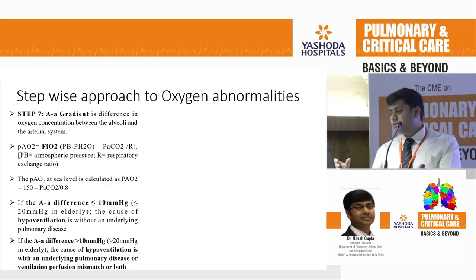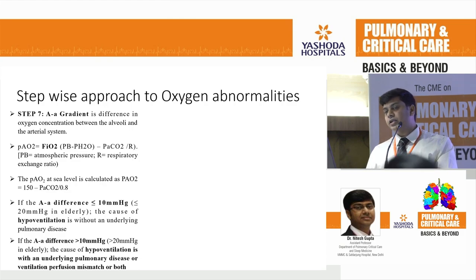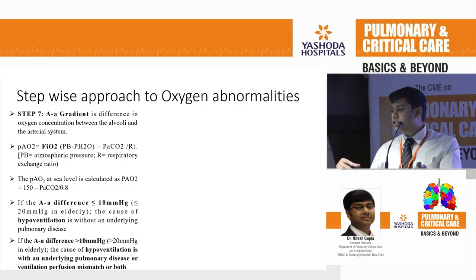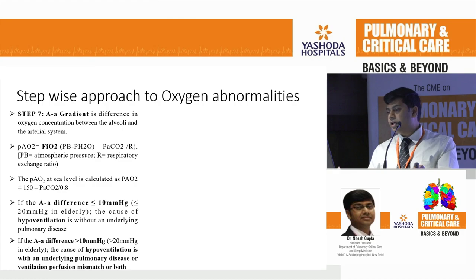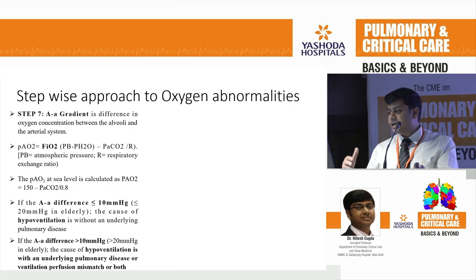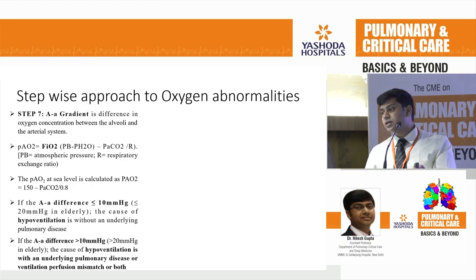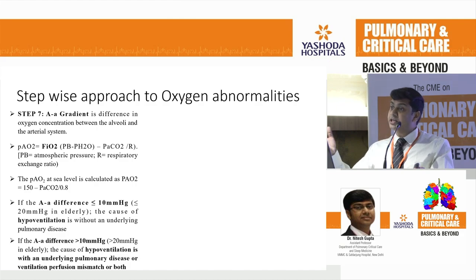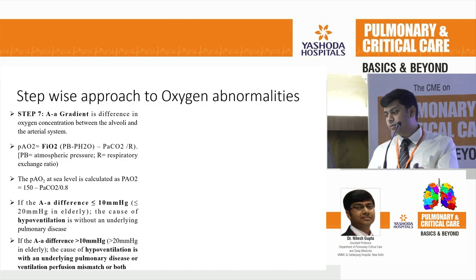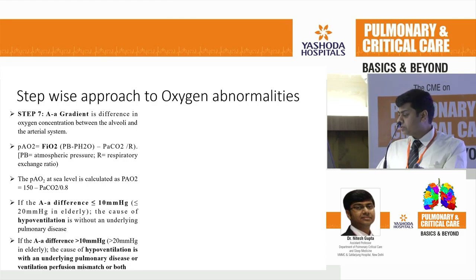For oxygen abnormalities, we calculate the alveolar-arterial gradient, because it tells you about the origin of the respiratory disorder — whether it is a central disorder or the lung is primarily involved. At sea level, the formula is simplified to 150 minus pCO2 divided by 0.8. If the A-a gradient is less than 10, the cause is hypoventilation without underlying pulmonary disease — the patient may have hypoxia with a normal X-ray, CT, and PFT. When the difference is more than 10, there is underlying pulmonary disorder: V/Q mismatch or both.